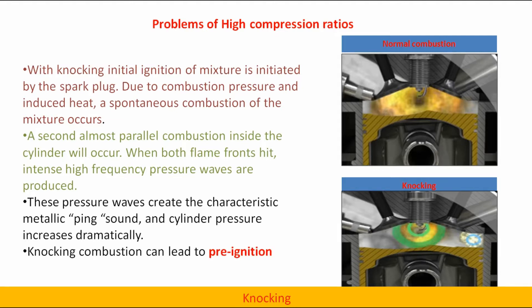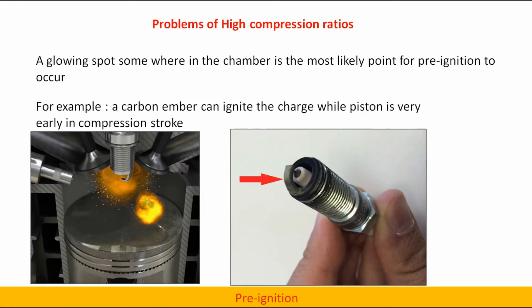Knocking combustion can lead to pre-ignition also. A glowing spot somewhere in the chamber is the most likely point for pre-ignition to occur. For example, a carbon ember can ignite the charge while piston is very early in compression stroke.